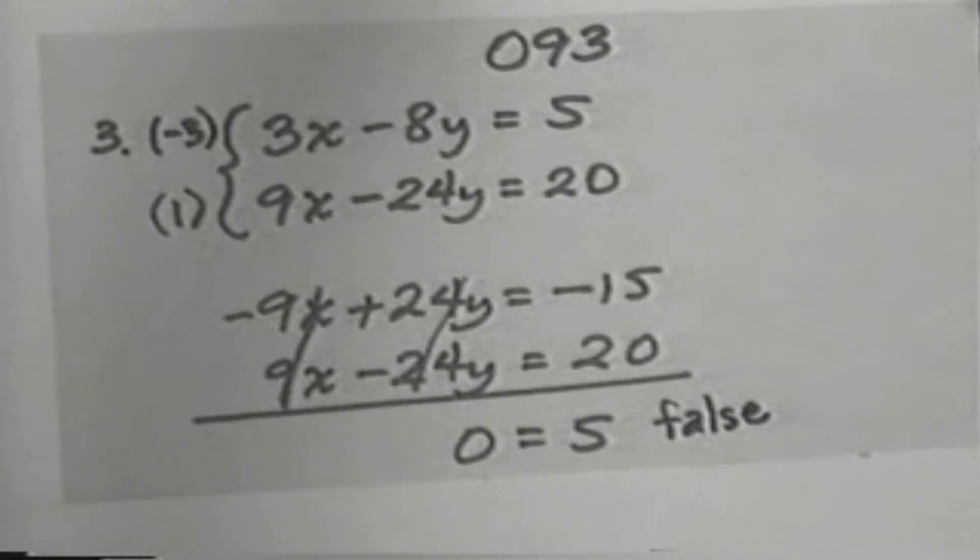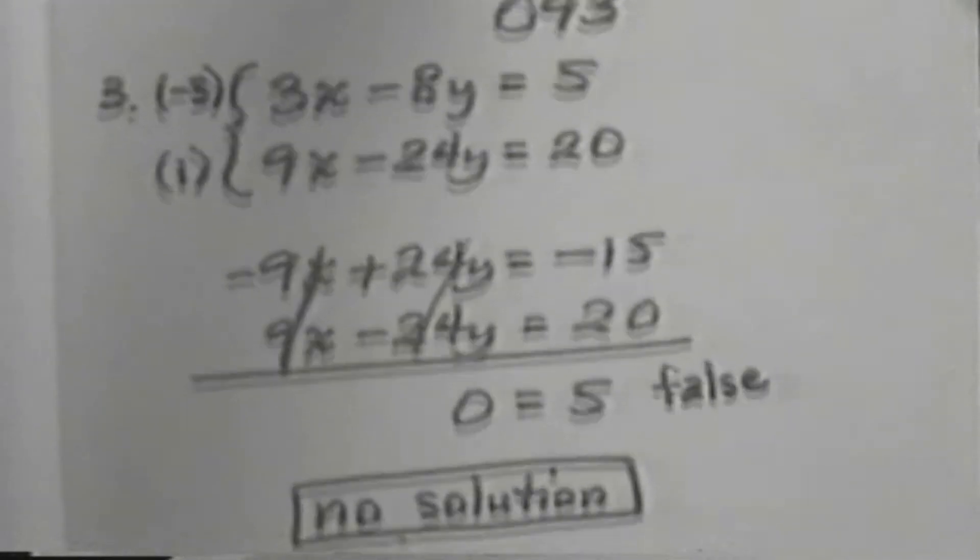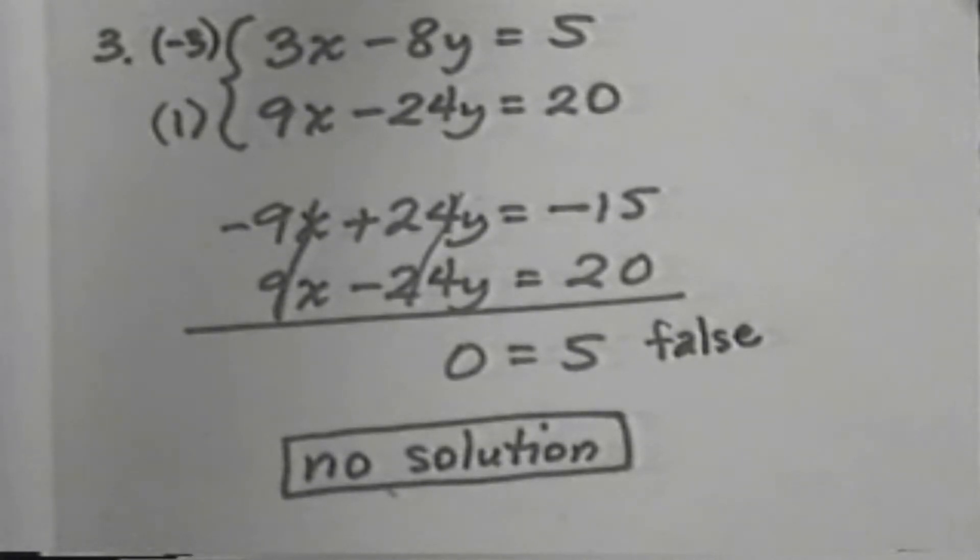That means that when we try to find a common solution, a common ordered pair, for this system of equations, we find it is impossible to do so. We come up with a false statement. That means that these two equations have nothing in common. That is, there is no solution to this system. No solution is our answer.